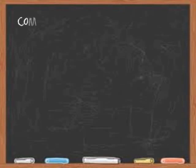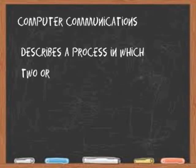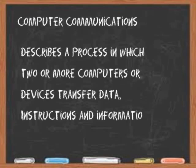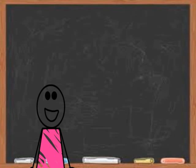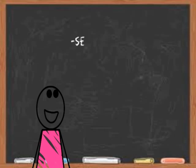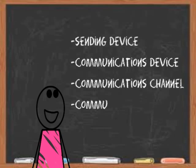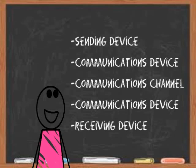Communications. Computer communication describes a process in which two or more computers or devices transfer data, instructions, and information. For successful communications, you need the following: a sending device, communications device, communications channel, communications device, and a receiving device.